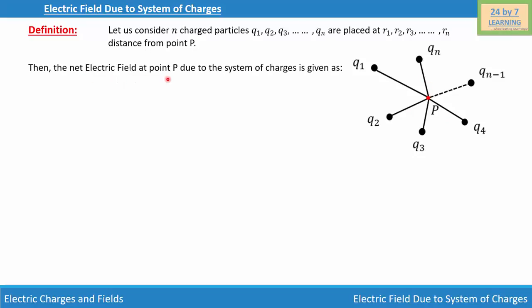The net electric field at point P due to the system of charges is given as: vector E is equal to E1 plus E2 plus E3 plus ... plus En. So basically, we are finding the magnitude of the electric field due to each individual charge particle Q1, Q2, Q3 ... Qn, and then adding them as a vector.